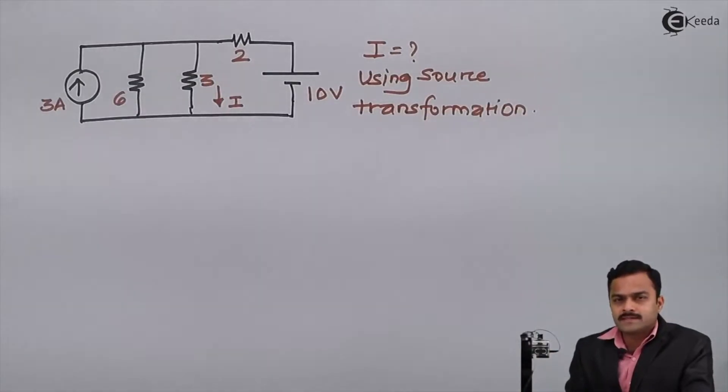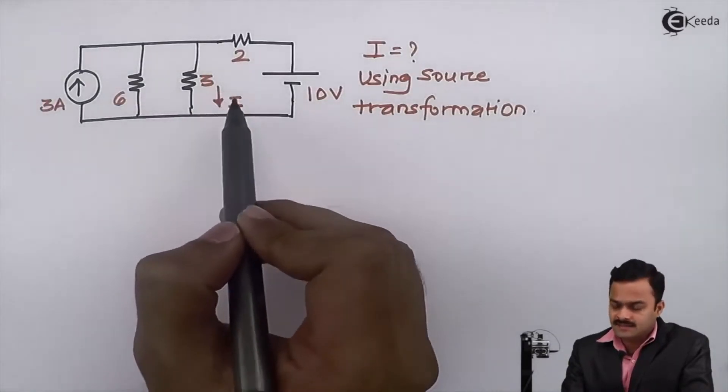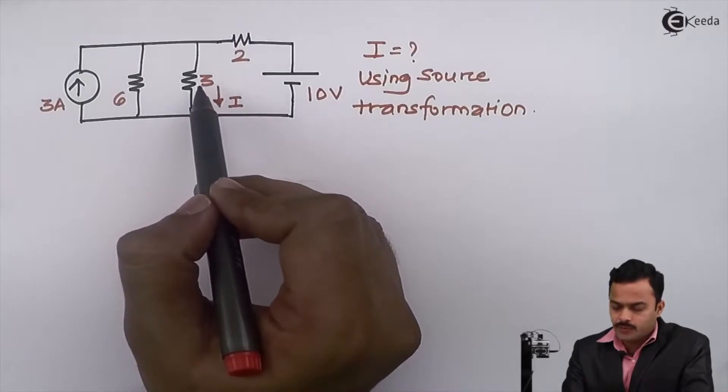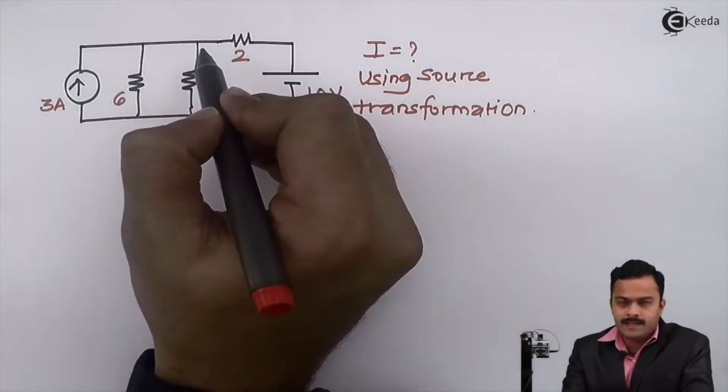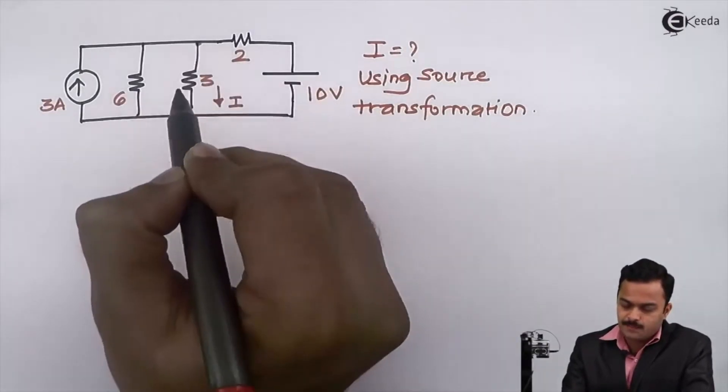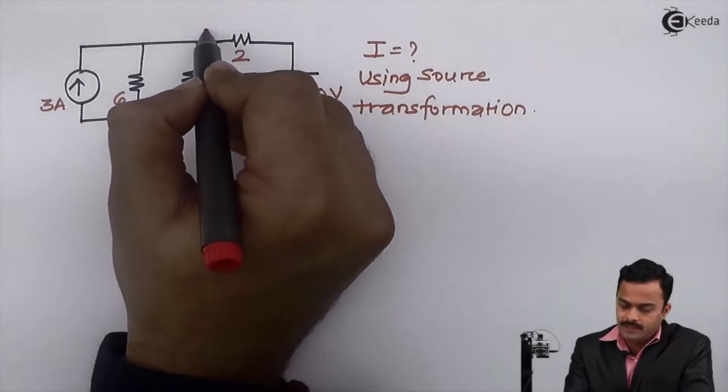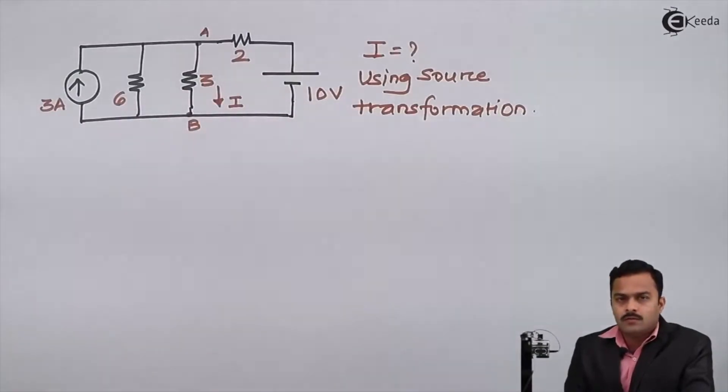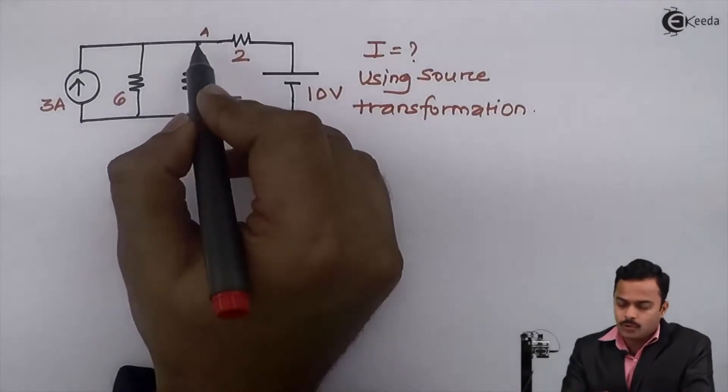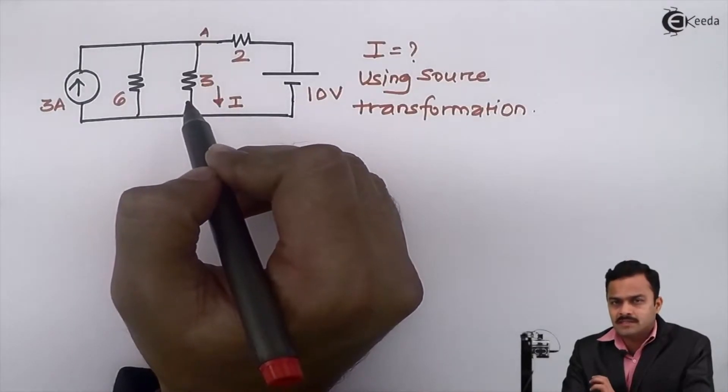Now two things I would like to make clear. First thing: they ask for this current I, which is the current flowing through the 3 ohm. So in our circuit, this part should not be touched while analyzing. I'll name here A and B, so its value or orientation should not be changed at all.